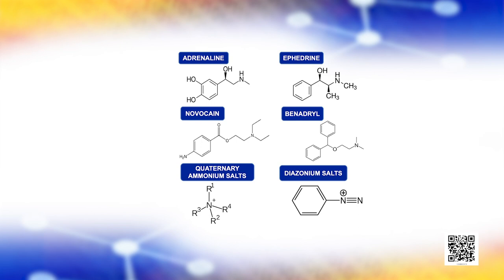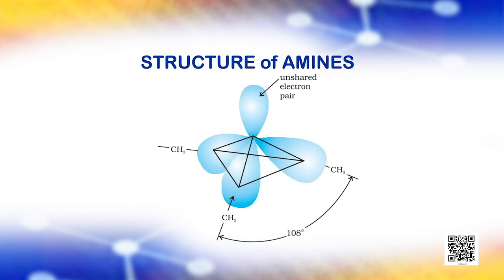Like ammonia, nitrogen atom of amines is trivalent and carries an unshared pair of electrons. Nitrogen orbitals in amines are therefore sp3 hybridized and the geometry of amines is pyramidal.